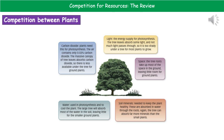In terms of water, we use that in photosynthesis and to also keep our plant cool. Our large tree is going to be absorbing lots of water and the small ground plants won't be able to access as much. Finally, carbon dioxide is also required for photosynthesis. If we've got a big canopy of trees covering the entire area, they're going to be absorbing carbon dioxide, meaning there's less available under the tree for those ground plants to grow.